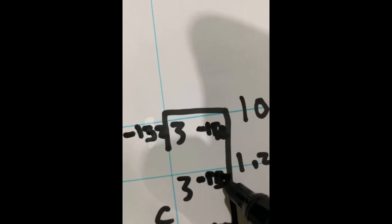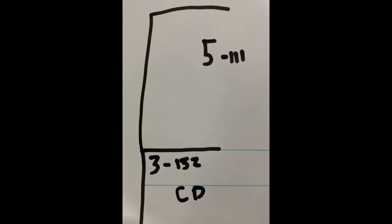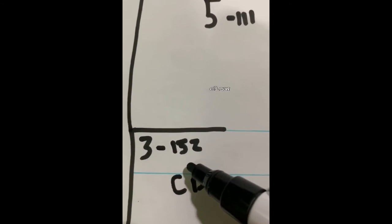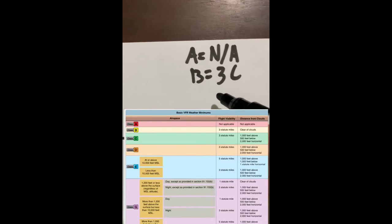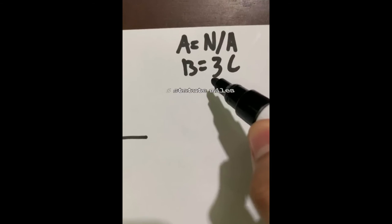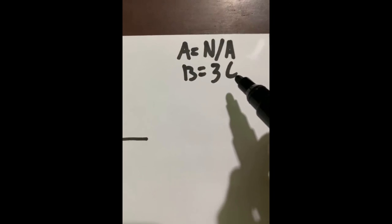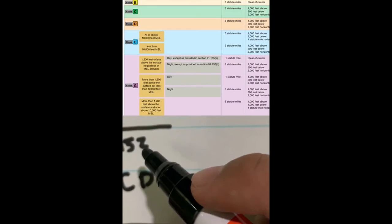To explain what this means: '152' stands for 1,000 feet above, 5,000 feet below, and 2,000 feet horizontally. For Class B, the '3' means 3 statute miles visibility and 'C' means clear of clouds. For Class C, the '3' means 3 statute miles, '1' means 1,000 feet above, '5' means 5,000 feet below, and '2' means 2,000 feet horizontal.